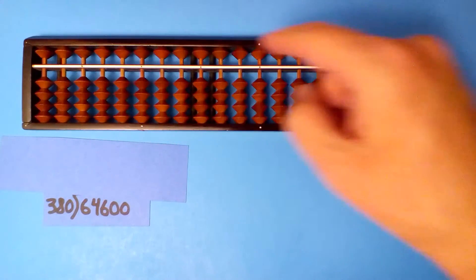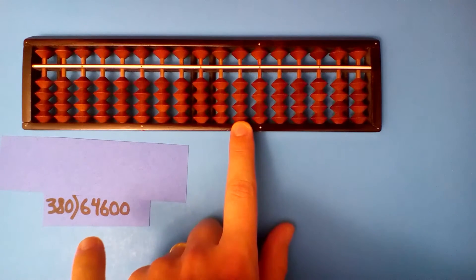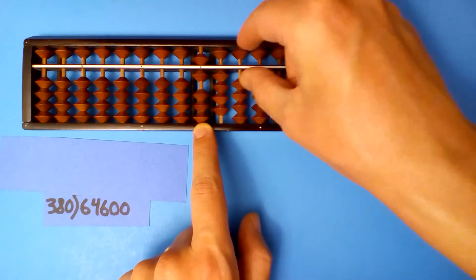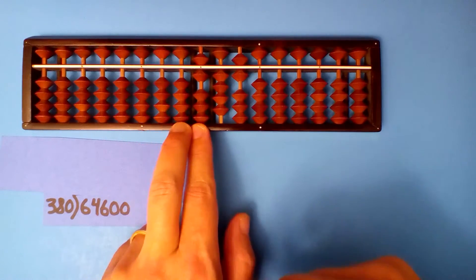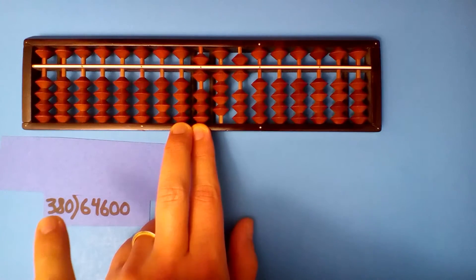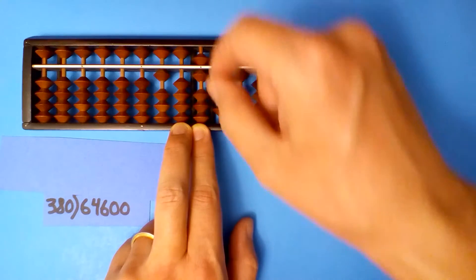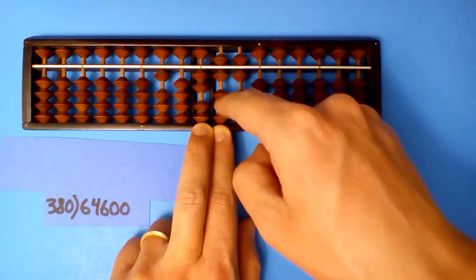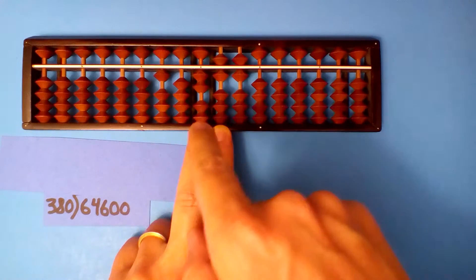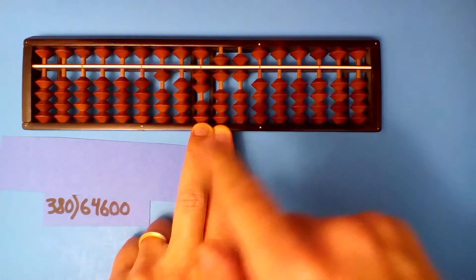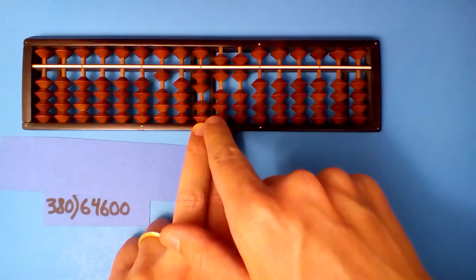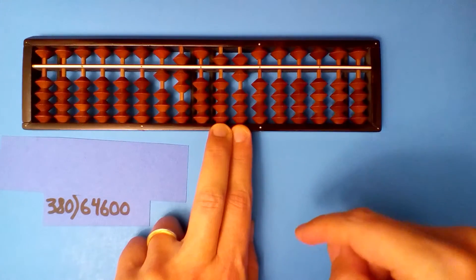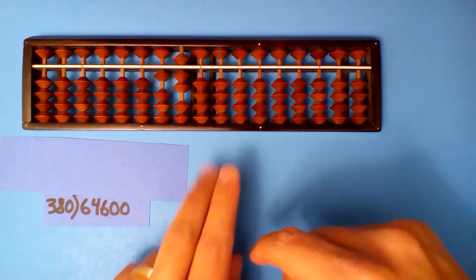64,600 divided by 380. Start on the hundreds, 5 versus 3 digits, so I go 1, 2 to the left. Set up the dividends and divide. 3 goes into 6 twice, but really it's 3.8, so 2 is too much. 1. 1 times 3 is 3, 1 times 8 is 8. 3.8 into 26, well 4 goes into 28 seven times, so I'll try 7. 7 times 3 is 21, 7 times 8 is 56, and that was correct. Our quotient is 170.